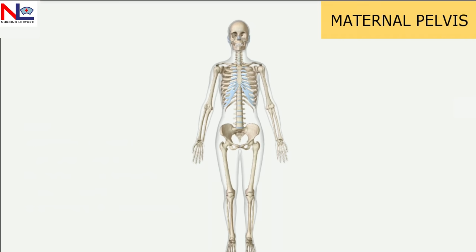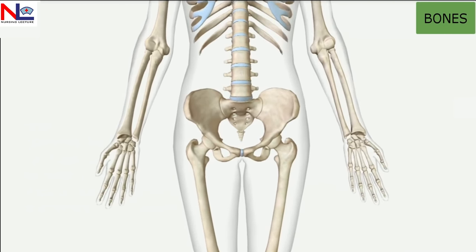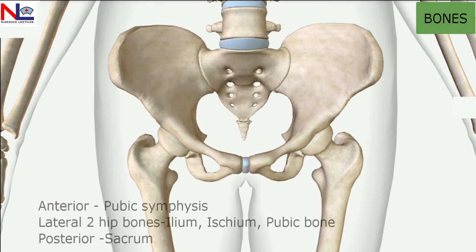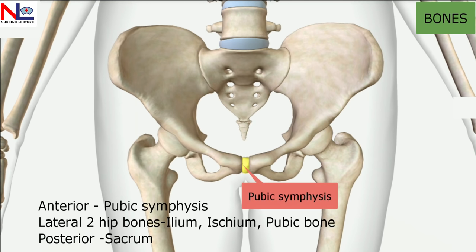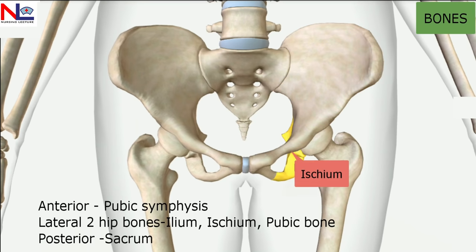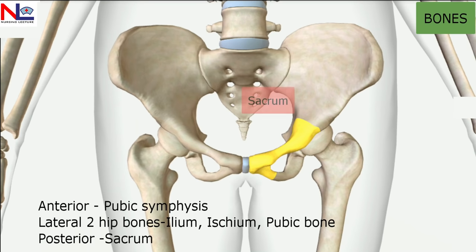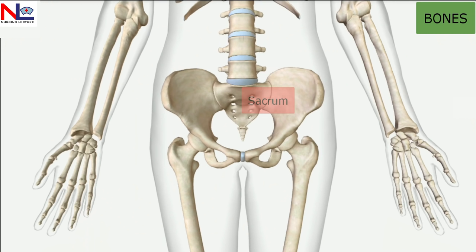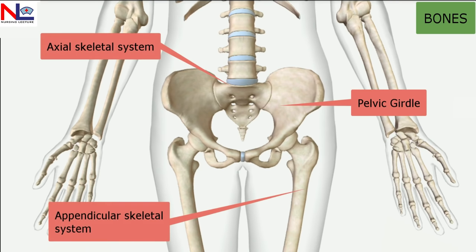Let's start with the bones. Here in this animation, you can see the bony pelvis, which forms a ring-like structure. It is bounded anteriorly by the symphysis pubis, a fibrocartilaginous joint, and laterally by three fused bones — the hip bones: superiorly the ileum, inferiorly and posteriorly the ischium, and anteriorly the pubic bone. These three hip bones form a girdle of contact — the pelvic girdle or hip girdle — which creates a connection between the axial skeletal system and the appendicular skeletal system.